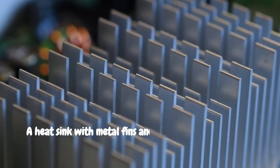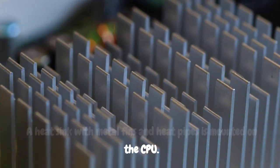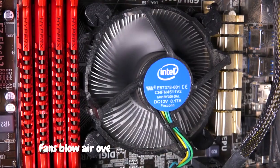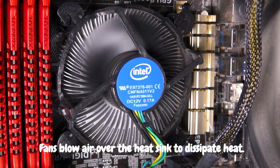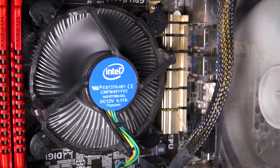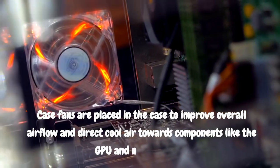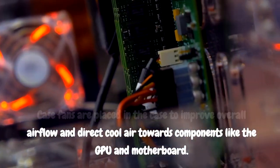A heat sink with metal fins and heat pipes is mounted on the CPU. Fans blow air over the heat sink to dissipate heat. Case fans are placed in the case to improve overall airflow and direct cool air towards components like the GPU and motherboard.